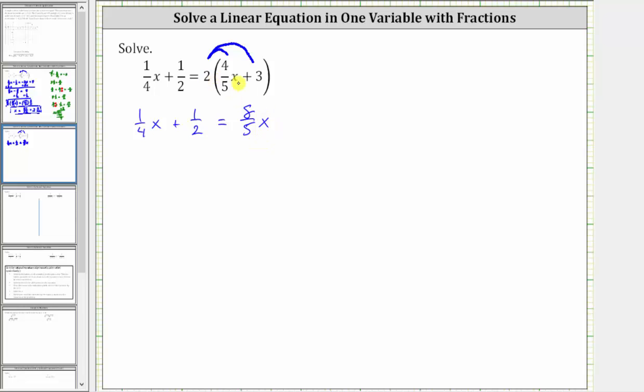To show some work, if we want to multiply two and 4/5, remember we write two as 2/1 times 4/5. There are no common factors between the numerators and denominators, and therefore we just multiply the numerators and denominators, which gives us 8/5, which is the reason why this product is 8/5 x. And then we have two times three, which is six, giving us plus six.